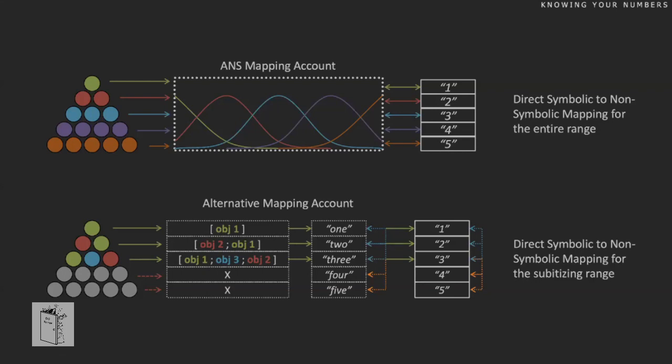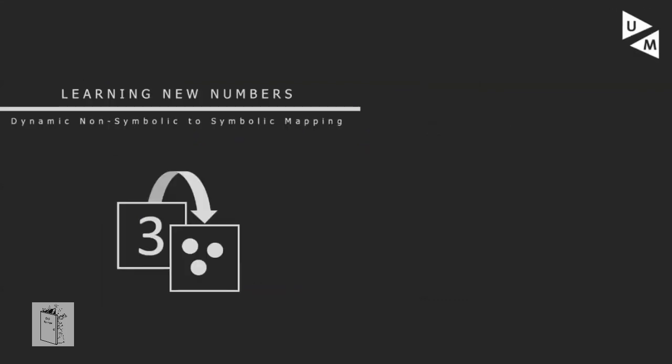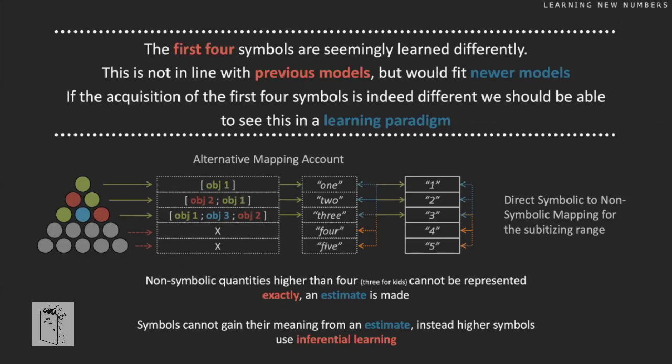That's where the first part of my PhD basically sits. We wanted to look at how this works in the brain — whether we can even find evidence of it there. Previous research showed those first four symbols are apparently learned differently, which fits the new model but not the old one. If they are indeed different, we should be able to see this in a learning paradigm: teach people new symbols and observe what happens.